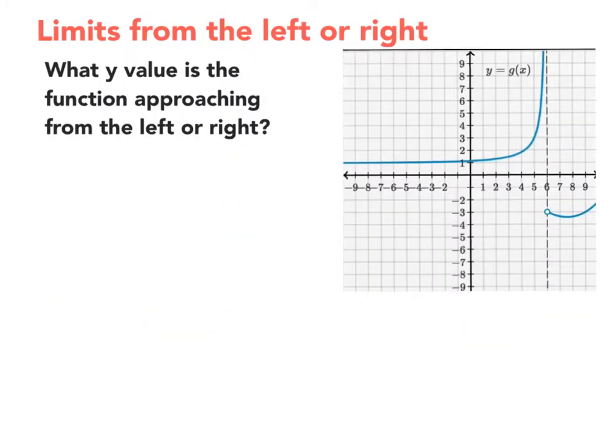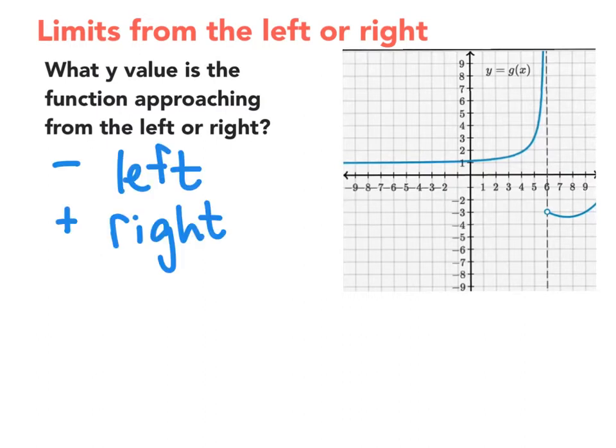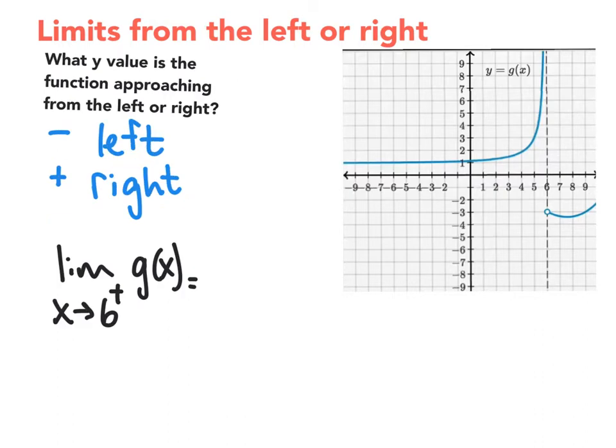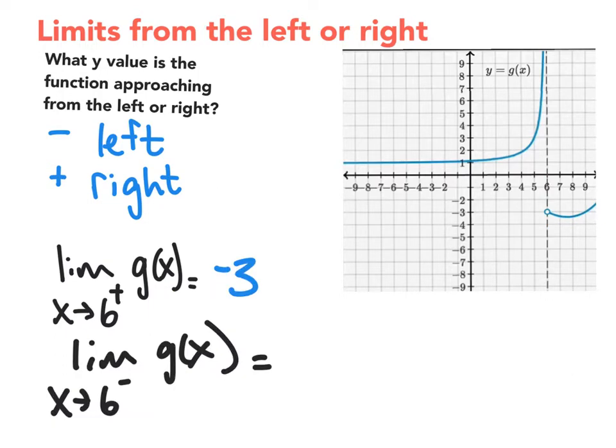Let's talk about finding limits from the left or right. And basically what I'm asking is, what y value is the function approaching from the left or right? The symbols that we use for left and right are just a minus sign and a plus sign. What's the limit of g(x) as x approaches 6 from the right? So here's 6. As x approaches 6 from the right, this y value is going to negative 3. But what about as x approaches 6 from the left? So as this function is approaching 6 from the left, it's actually going off to infinity. So sometimes you'll see people write infinity, but we will say that this limit does not exist.